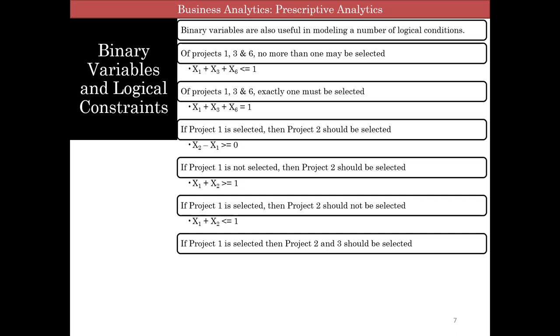Now let's look at this. If 1 is selected, then 2 and 3 should be selected. So in this case, we break it up, we can say x2 is greater than x1 or x2 minus x1 is greater than 0, very similar to this one, very similar to what we have here. That's this part. And you do the same thing for 3. So you have two constraints essentially there.